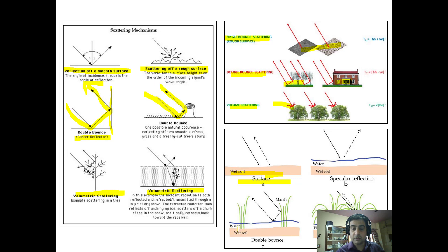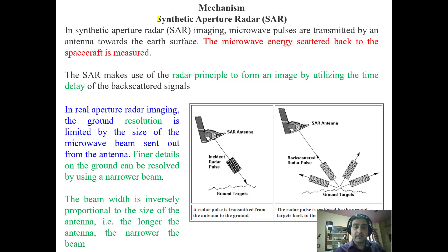Wet soil has a smooth surface producing a linear bounce. For irrigated crops, one bounce may go through water then to the crops, and specular reflection is also possible. In synthetic aperture radar imaging, microwave pulses are transmitted by an antenna towards the Earth's surface, and the pulses are received back by the sensor. The microwave energy scattered back to the spacecraft is measured. SAR uses radar principles by using time delay — the backscatter is measured by the time it takes from emitting to bouncing and back to the sensor to form the image.